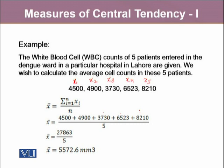This all adds up to 27,863. If we divide this sum by the number of observations, since we added five observations, we will divide it by five, and the answer turns out to be 5,572.6 mm³. This value is an average value which represents all these five values given above. The way we interpret this average is that all these five patients have average cell count of 5,572.6.